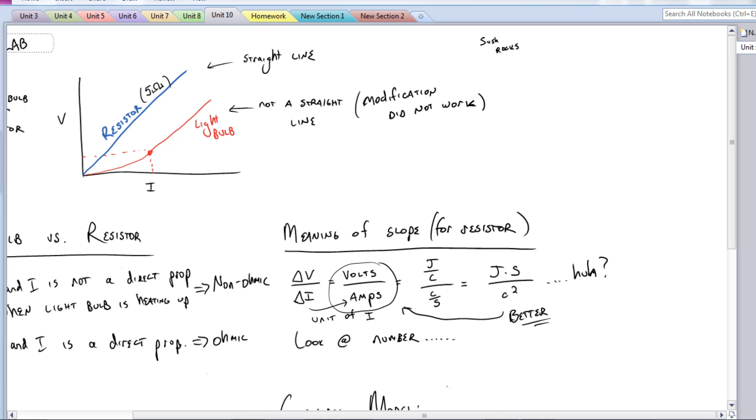If you started to look at the units, you would have realized you would have been like joule per coulomb divided by coulomb per second. You would have joule seconds per coulomb squared. And to really try to get any understanding out of it, that's really wacky. So you don't want to go that route.